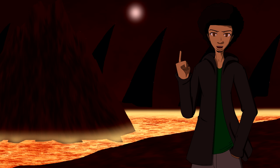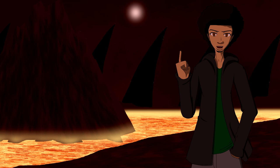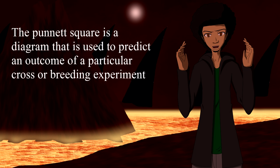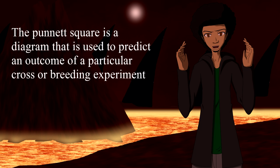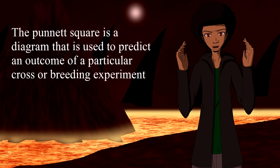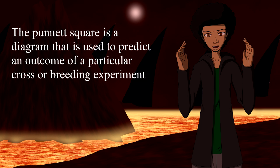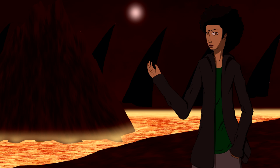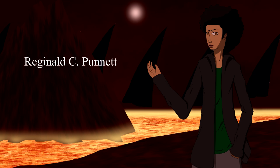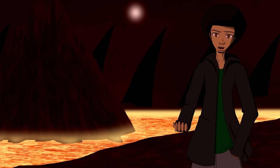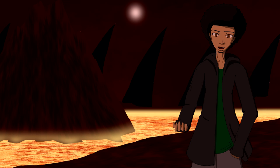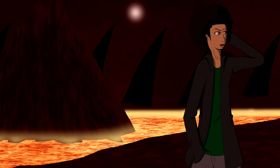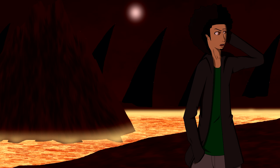Speaking of predictions, I'm going to talk about Punnett squares. The Punnett square is a diagram used to predict an outcome of a particular cross or breeding experiment. It was named after Reginald C. Punnett. It's used by biologists to determine the probability of an offspring having a particular genotype.